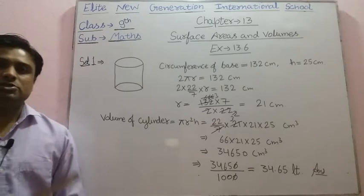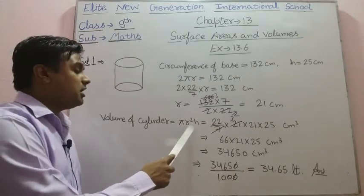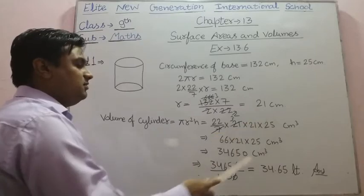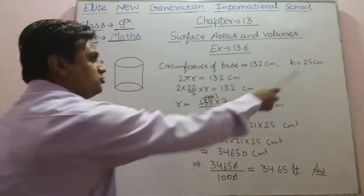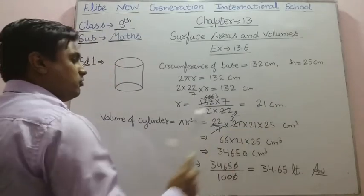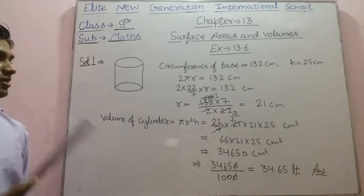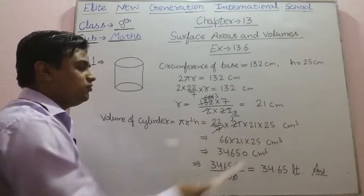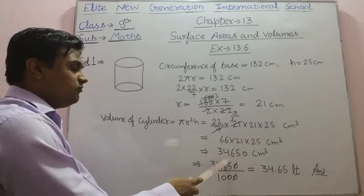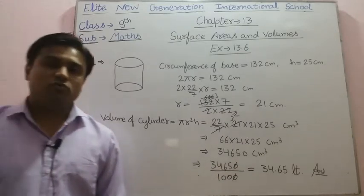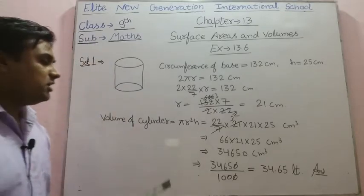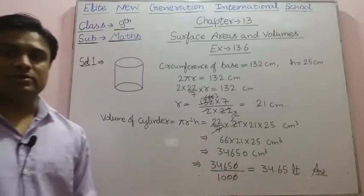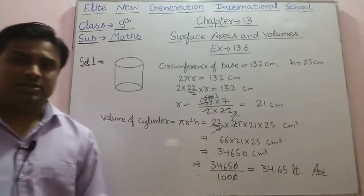Now we have to find its capacity, which means volume. Volume of cylinder is given by formula πr²h. Putting the values: (22/7) × 21 × 21 × 25. The 21 cancels with 7 three times; 22 × 3 = 66, and 21 × 25 = 525, giving 34,650 centimeter cube. Converting to liters by dividing by 1000 gives 34.65 liters. So 34.65 liters will be its capacity.